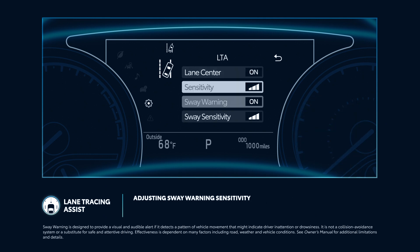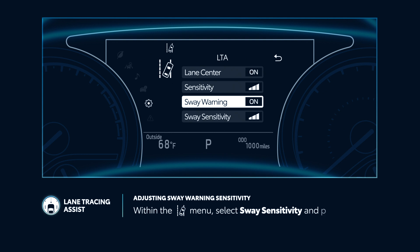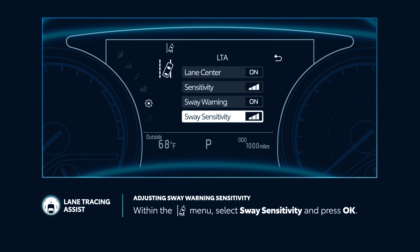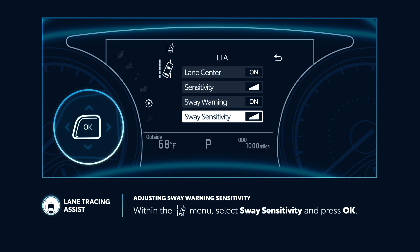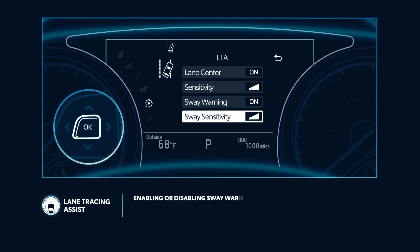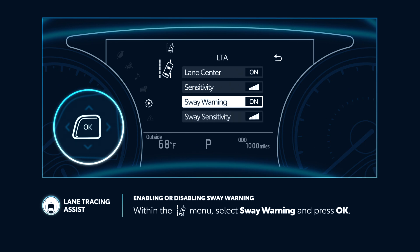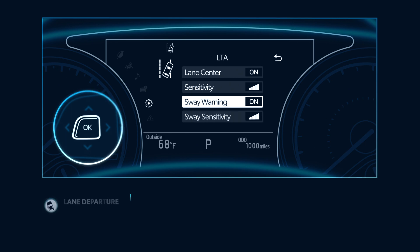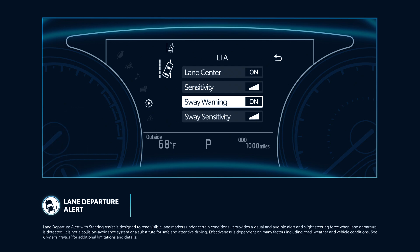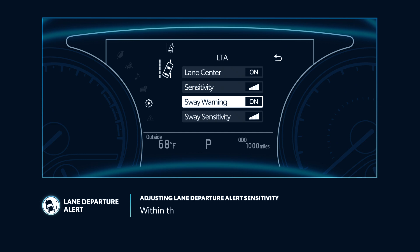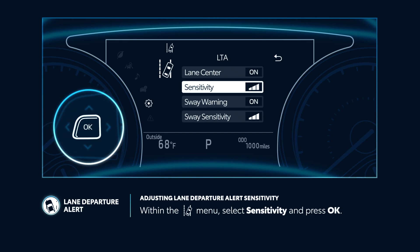This system also includes a Sway Warning function that can alert drivers if excessive swaying between lane markers is detected. To adjust the Sway Warning sensitivity, select Sway Sensitivity from the LTA menu and press OK to toggle the setting. To disable Sway Warning, select Sway Warning from the LTA menu and press OK. Meanwhile, Lane Departure Alert with Steering Assist may help you avoid unintended lane departure by alerting you when it senses that you veered from your lane, and may provide gentle corrective steering if the driver does not take corrective action. To adjust the system's sensitivity, select Sensitivity from within the LTA menu and press OK to toggle the setting.